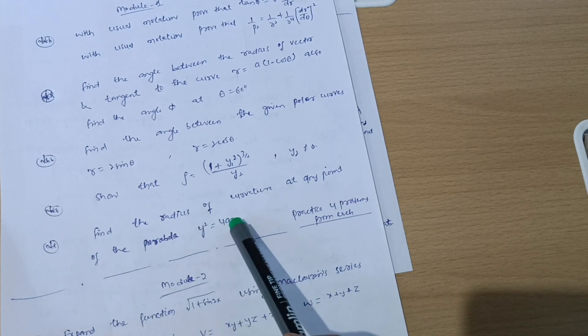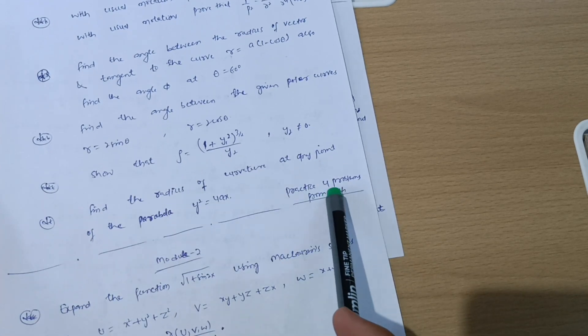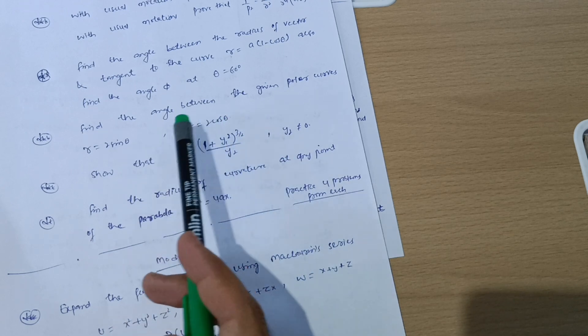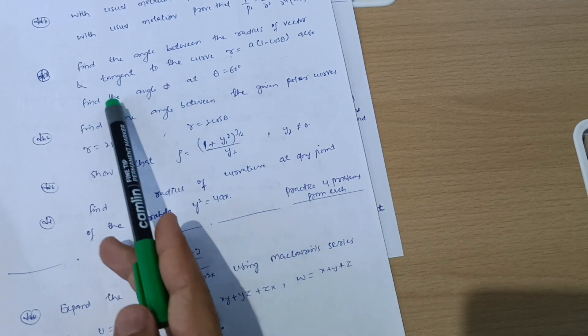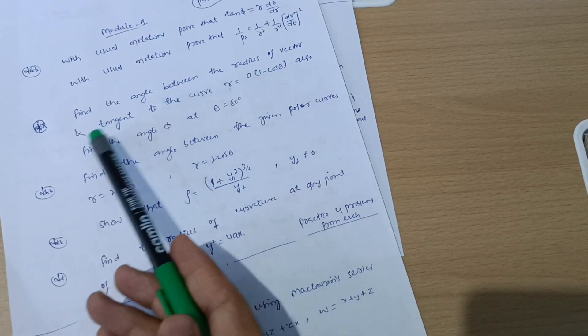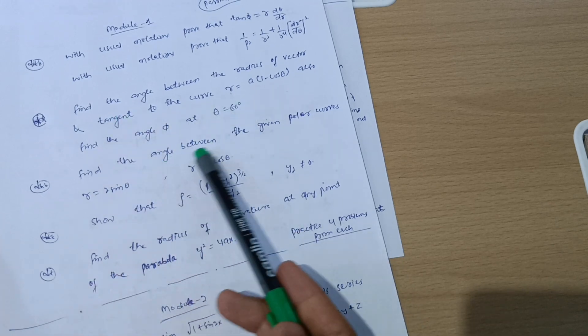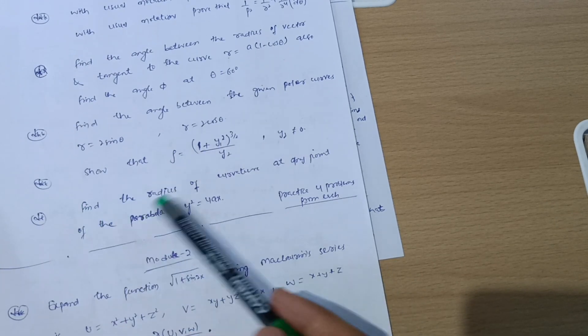Also go through: find the radius of curvature at any point of the parabola y² = 4x. You should practice four problems from each concept whatever I have mentioned: angle between radius vector and tangent to the curve, angle between the given polar curves, and radius of curvature.